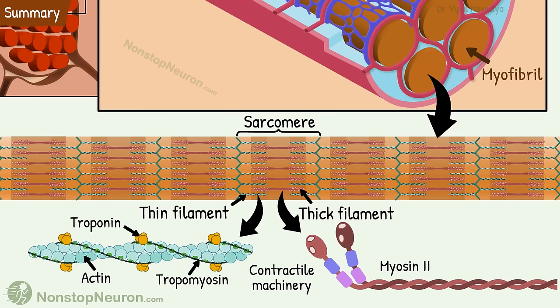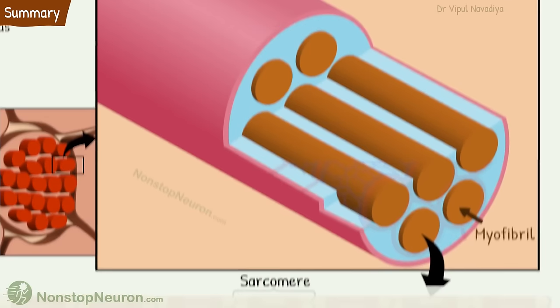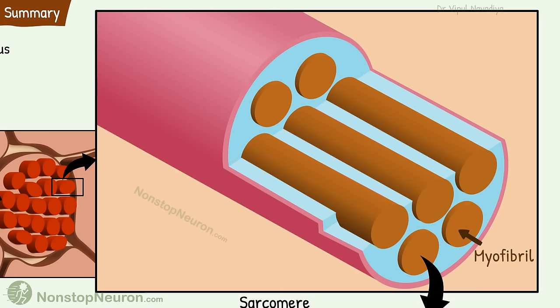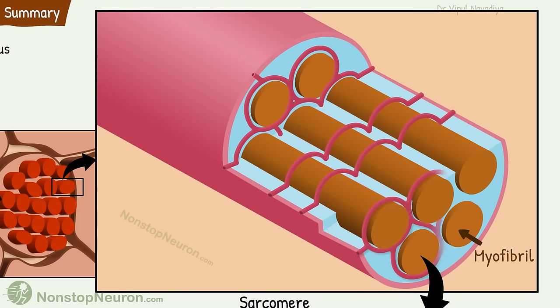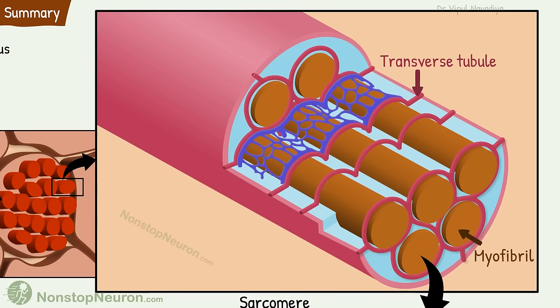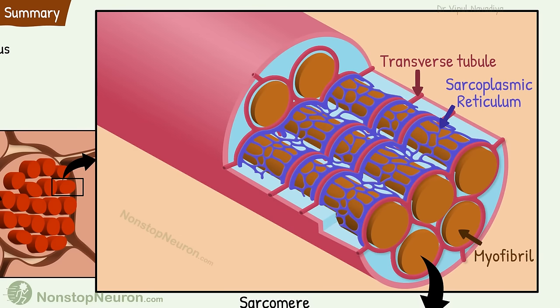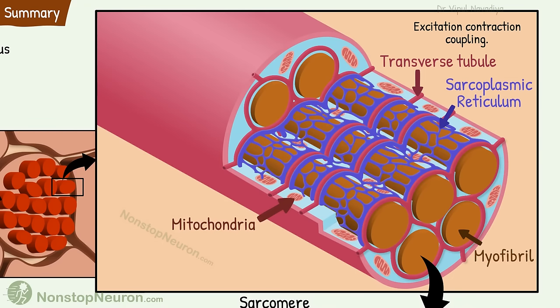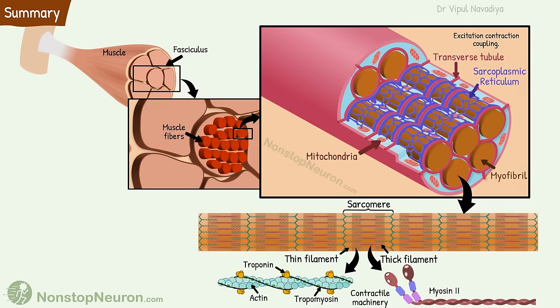Thick filaments are made up of myosin II molecules. These filaments are the contractile machinery of the muscle. The myofibrils are surrounded by the T-tubule–sarcoplasmic reticulum system. T-tubules invaginate from the cell membrane and branch to make a network around myofibrils. Associated with them is the sarcoplasmic reticulum, which stores calcium. Together, T-tubules and sarcoplasmic reticulum play a very important role in excitation-contraction coupling. Dispersed throughout the cytoplasm are mitochondria that supply ATP for muscle contraction. So this was the physiological anatomy of the skeletal muscle.